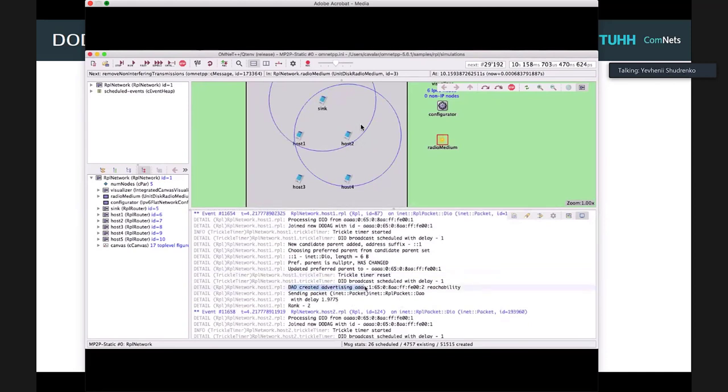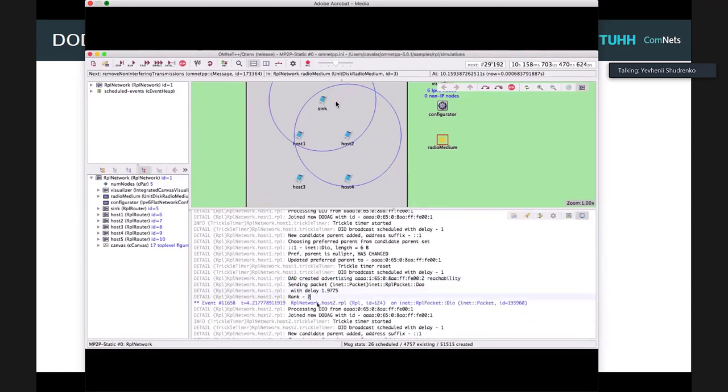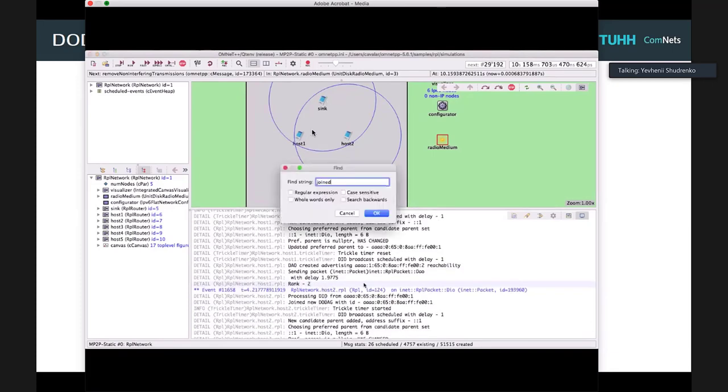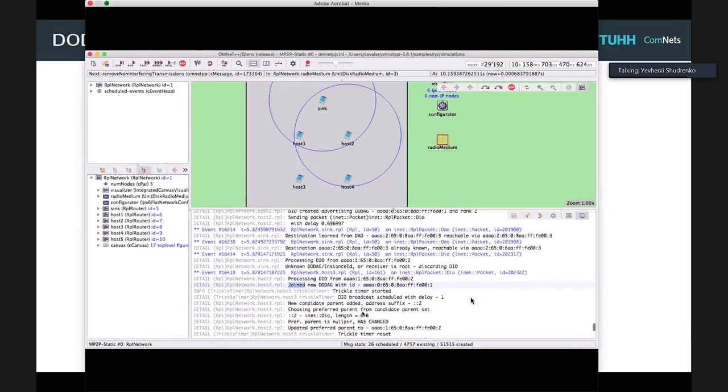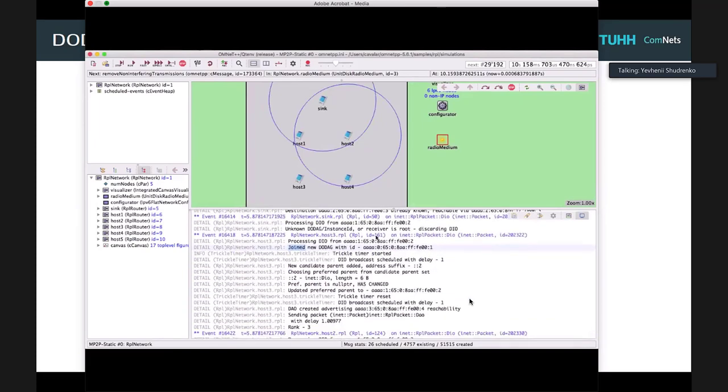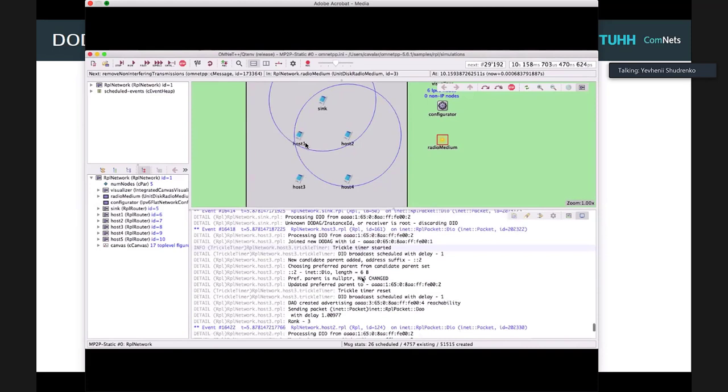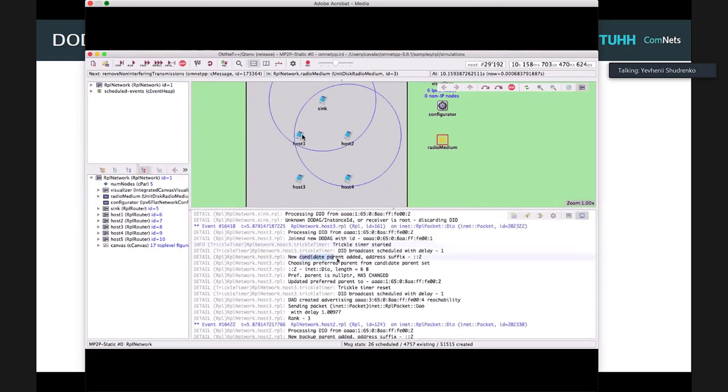Also, because in this case DAO functionality is enabled, host 1 upon joining a DODAG also introduces its presence to the sink by sending a DAO message. Basically, this process happens hierarchically further or sequentially, and all nodes are joining the DODAG with corresponding preferred parent.